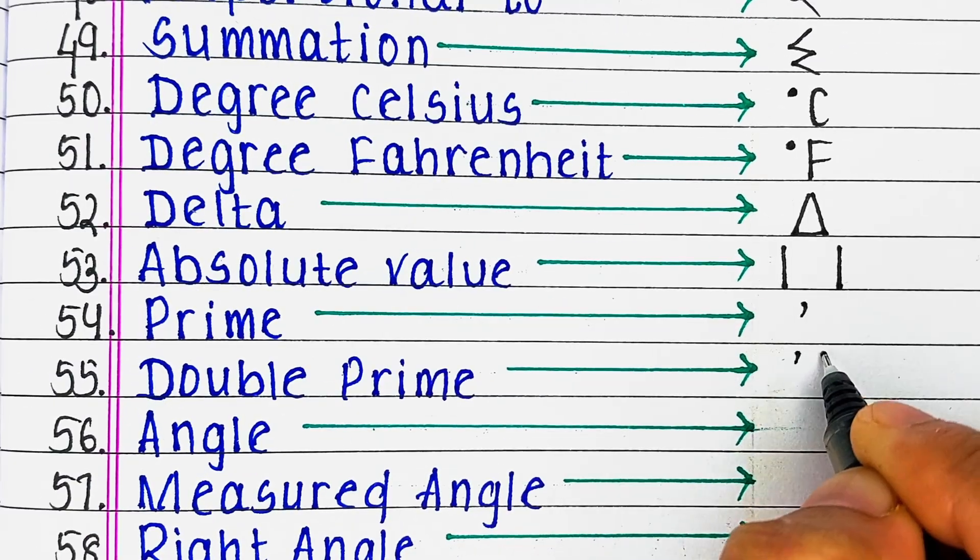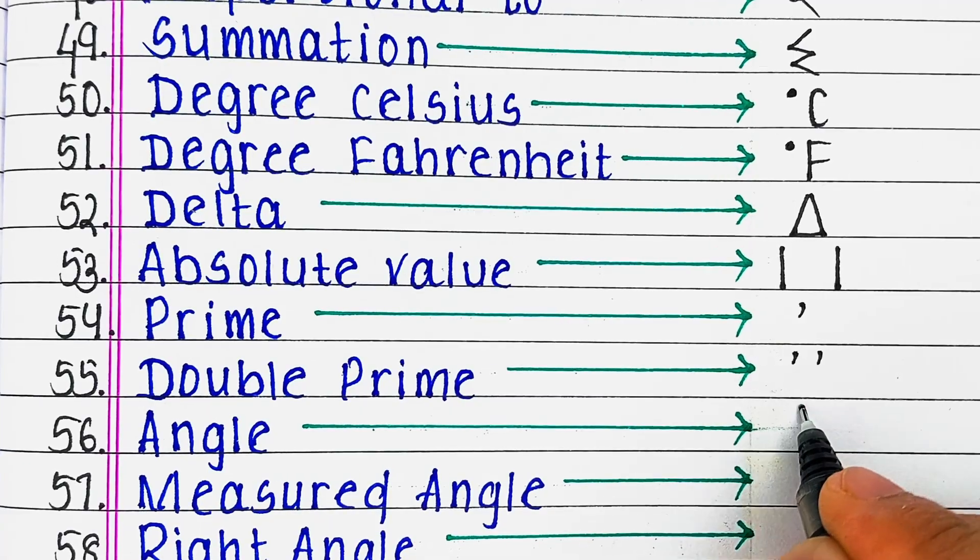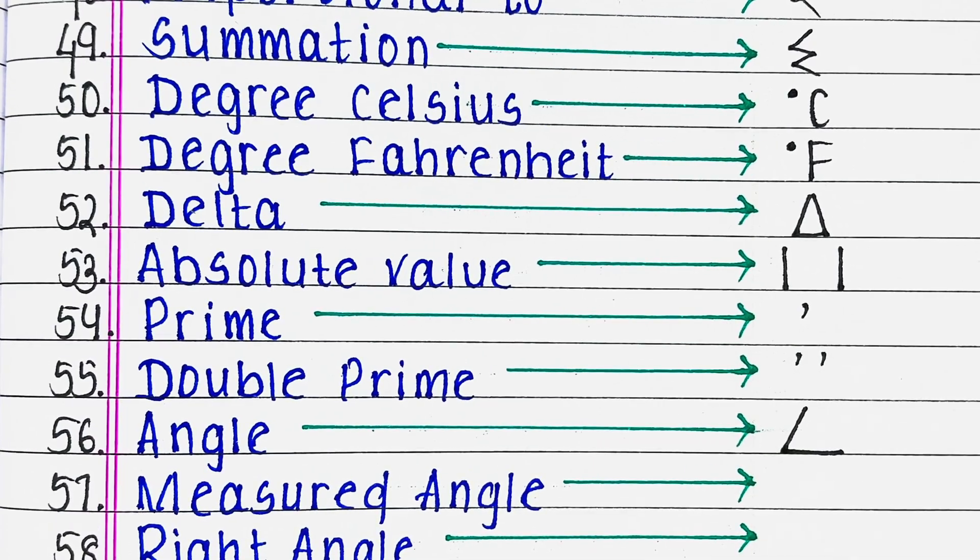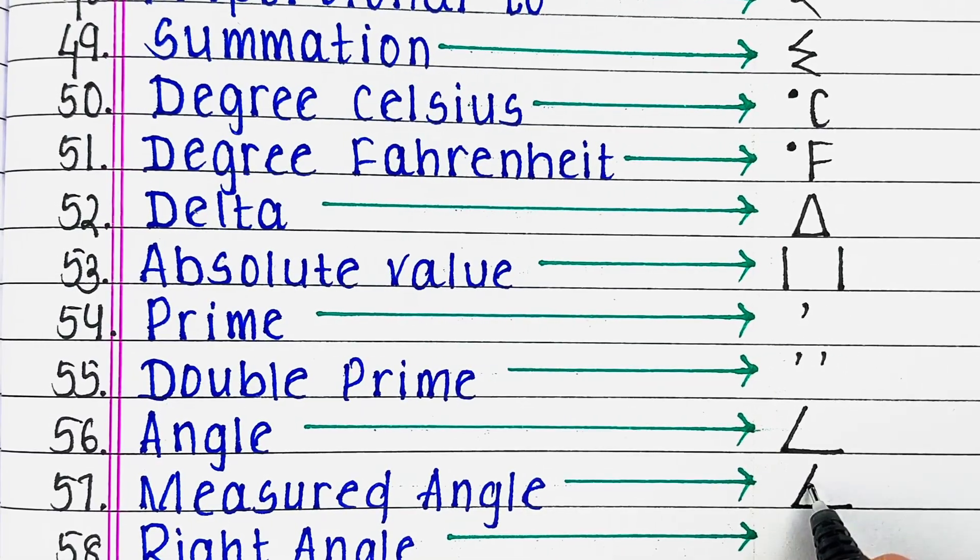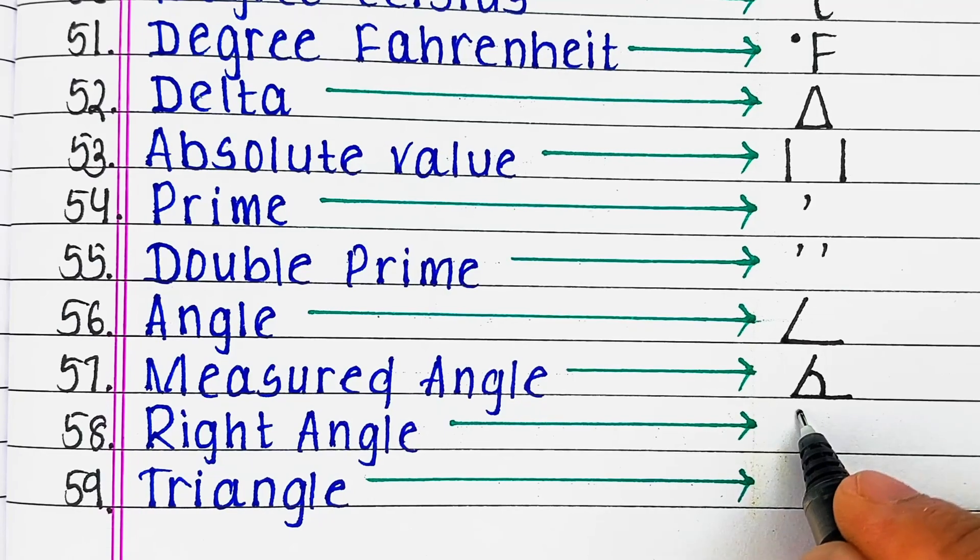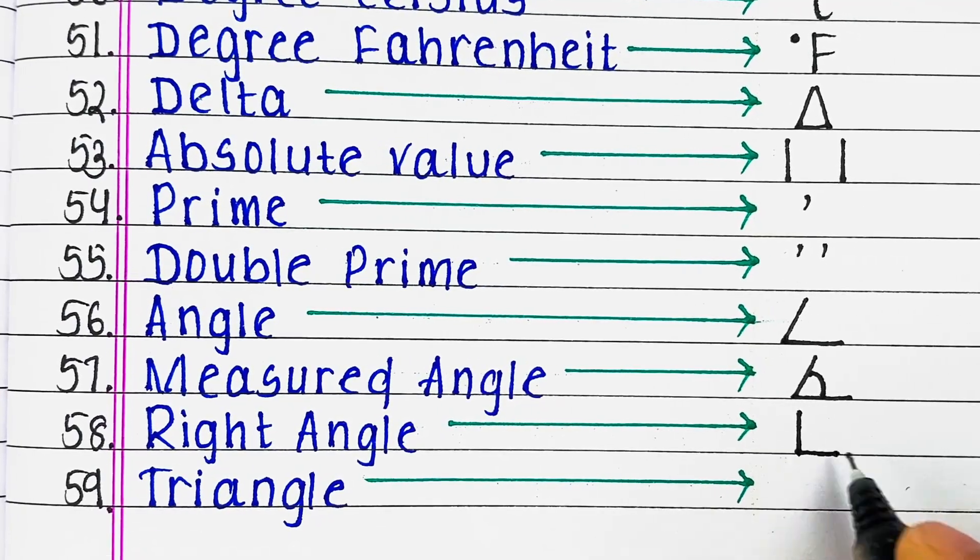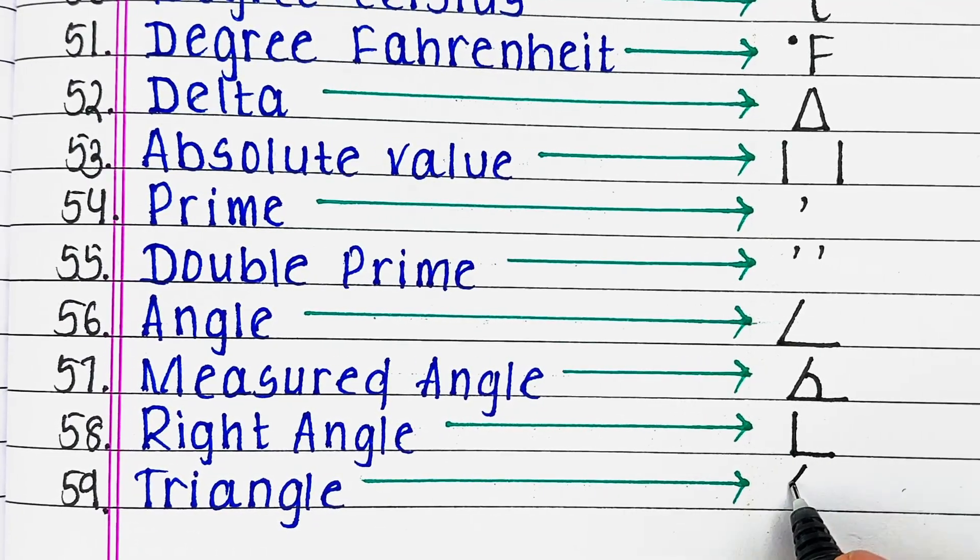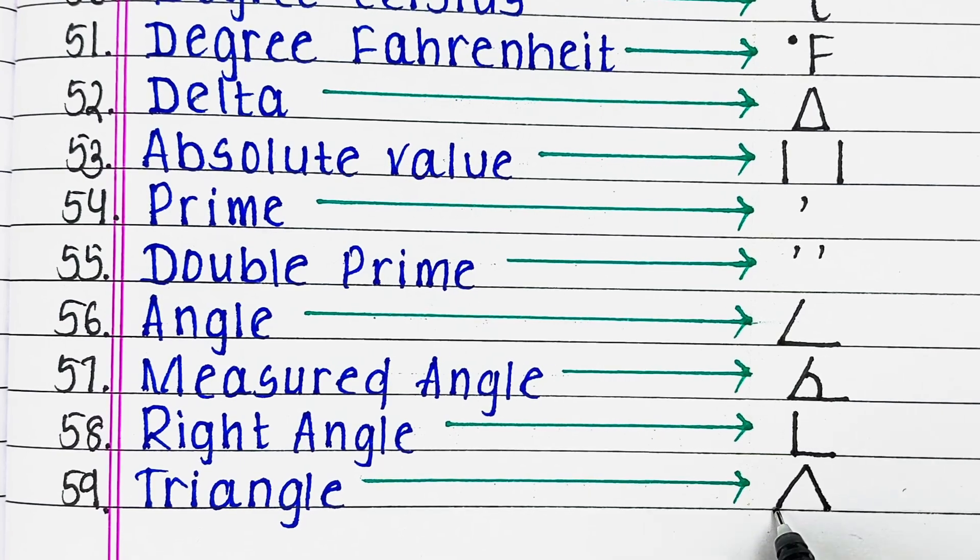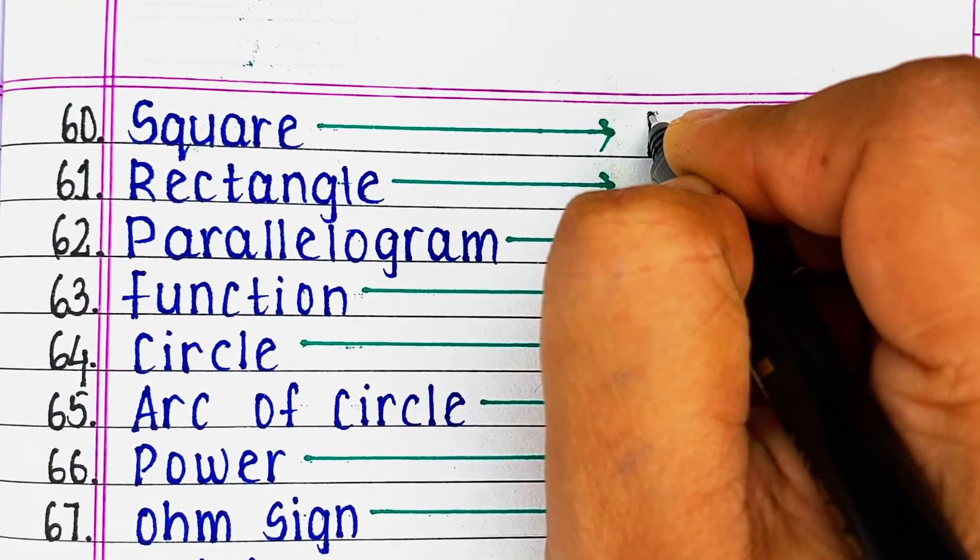Next is double prime, next angle, next measured angle, next we have right angle, next is triangle.